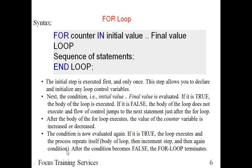And in the last step, the condition is now evaluated again. If the condition is true, then it is evaluated again and again. And if the condition is false, then it is terminated. So this is the simple for loop — the syntax and some description of how we use and how exactly the for loop executes.